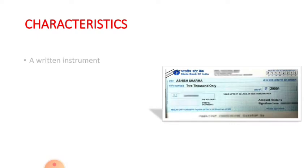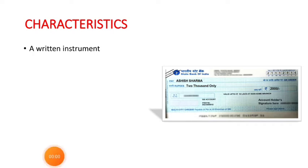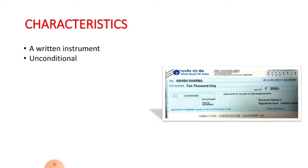Following are the essentials of a check. Firstly, it is a written instrument. It means it is an instrument in writing. The contents may be typed or in ink. Bankers do not accept checks in pencil just to protect the customers against any manipulations or alterations.